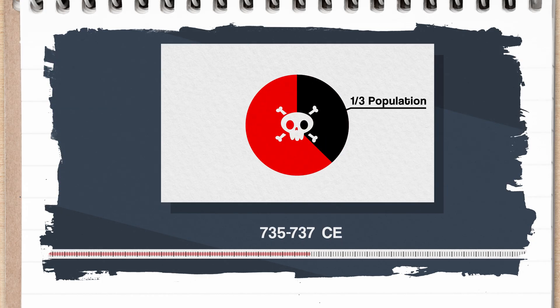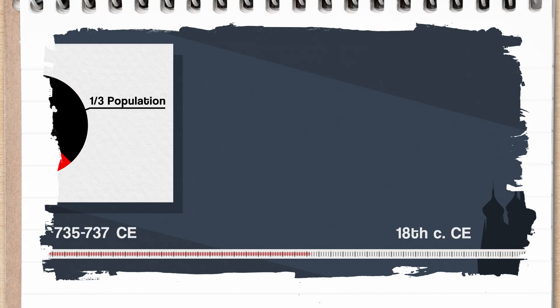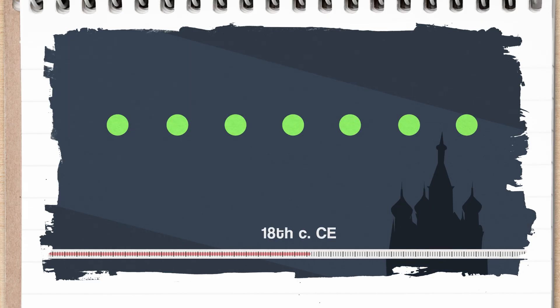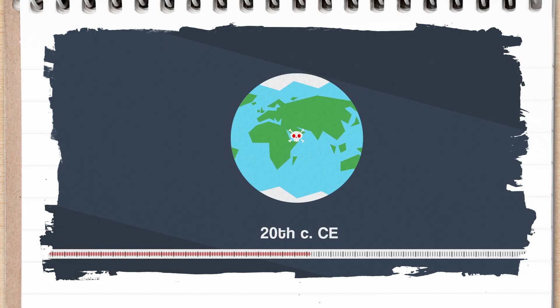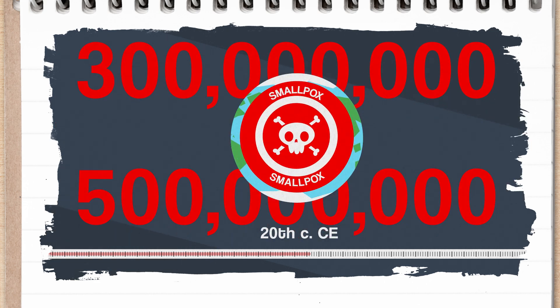In the mid-700s, it may have killed as much as a third of Japan's entire population. In 18th century Russia, it reportedly killed every seventh child. In the 20th century alone, it killed between an estimated 300 and 500 million people around the world.